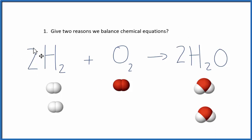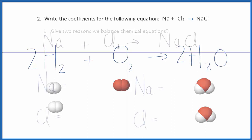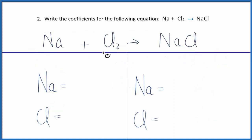The other reason we balance equations is to get the numbers — the one and the two. Those are ratios, and we use those to calculate chemical quantities.